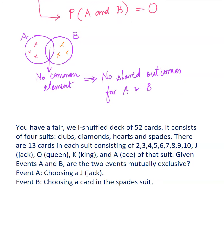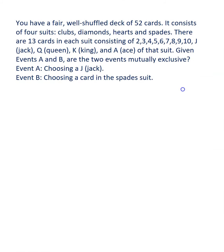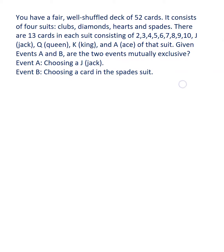So you have a fair, well-shuffled deck of 52 cards. It consists of four suits — clubs, diamonds, hearts, and spades. There are 13 cards in each suit consisting of 2, 3, 4, 5, 6, 7, 8, 9, 10, Jack, Queen, King, and Ace of that suit.